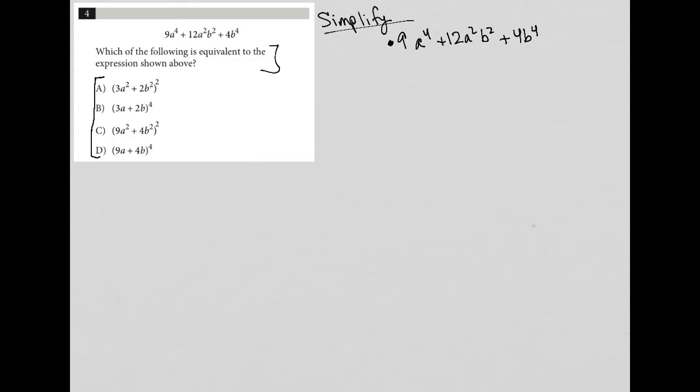There are a few ways to answer this question. One is to factor this trinomial. And then what we'll get out if we do it the right way is one of the answer choices. So if you know how to do that, that's definitely a very fast way to get it.